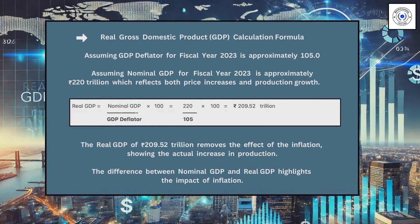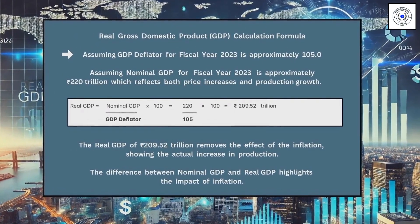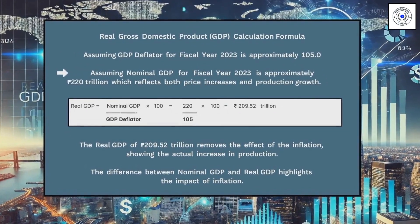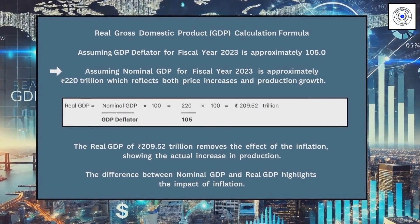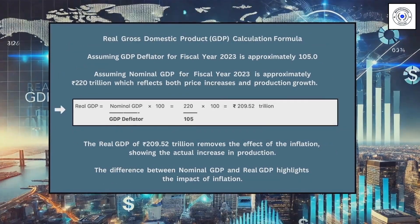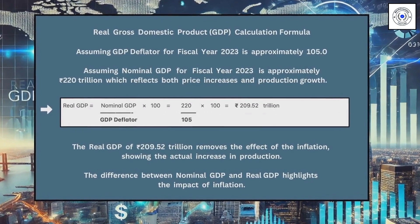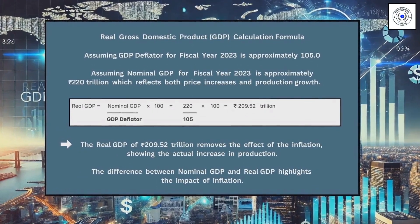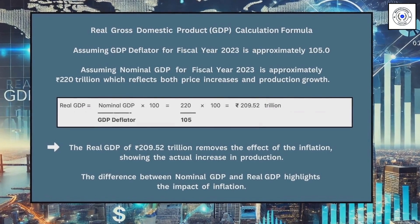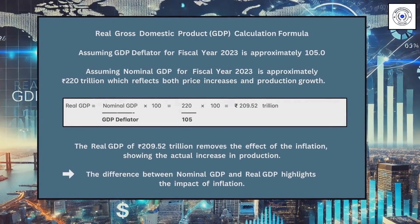The Real GDP calculation formula: assuming the GDP deflator for fiscal year 2023 is approximately 105, and nominal GDP for fiscal year 2023 is approximately 220 trillion rupees — reflecting both price increases and production growth — real GDP is calculated from nominal GDP using the GDP deflator. The real GDP of 209.52 trillion rupees removes the effect of inflation, showing the actual increase in production. The difference between nominal GDP and real GDP highlights the impact of inflation.